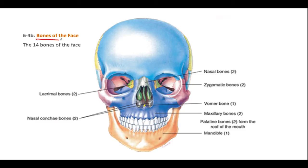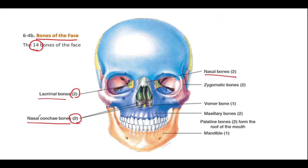Now we look at the bones of the face. There are 14 bones of the face. Those are the lacrimal bones — there are two of those — the nasal concha bones — there are two of those — the nasal bones, and the zygomatic bones — there are two of those.